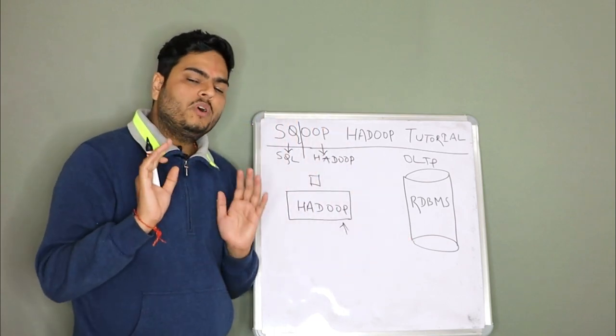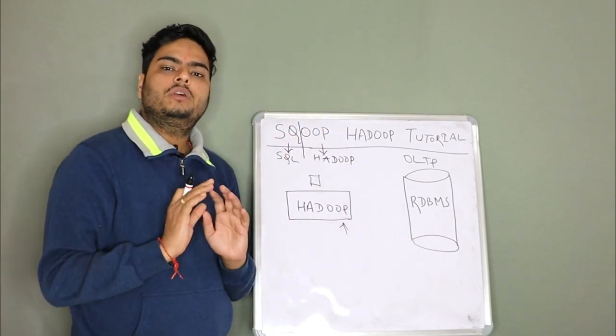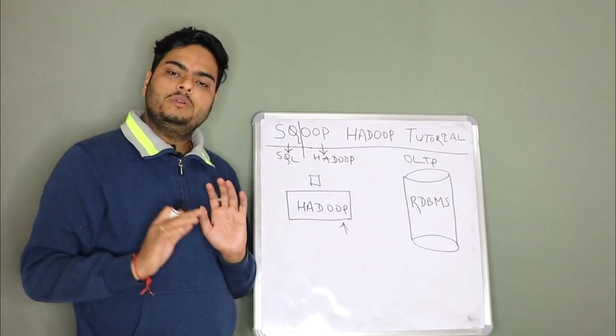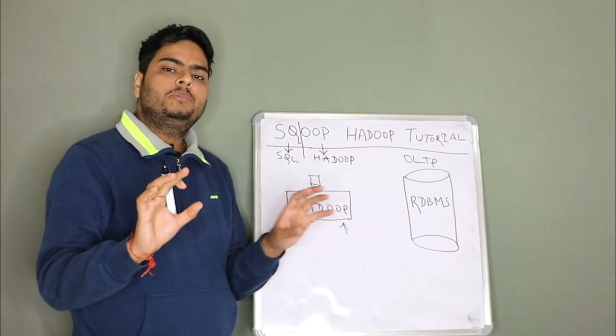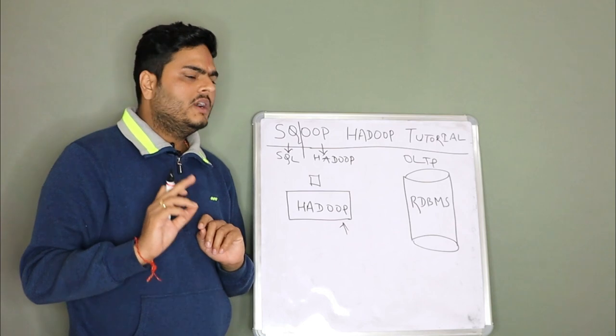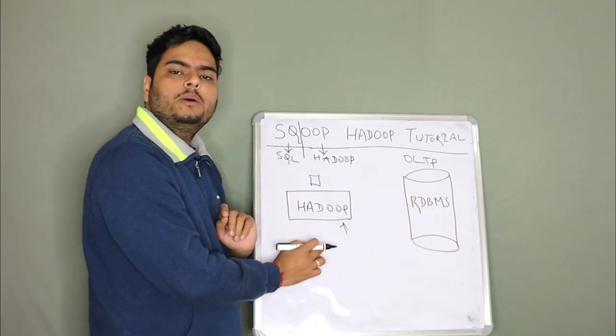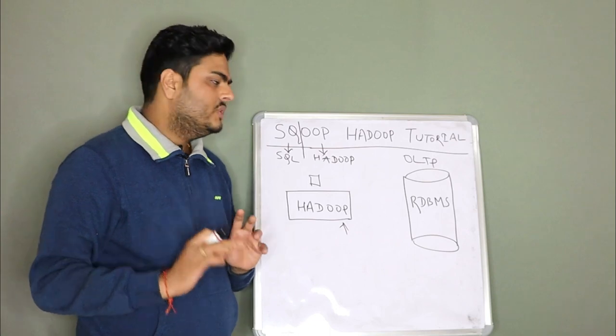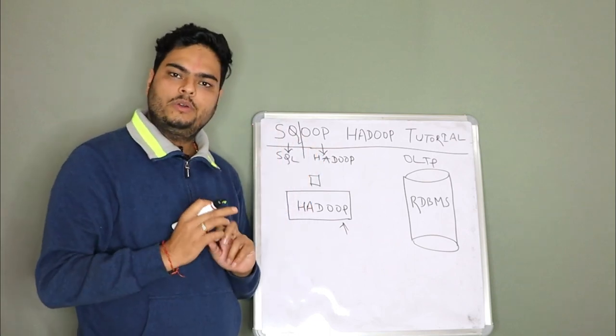Now that is the use of Hadoop and that is the use of RDBMS. Hadoop is a very fast processing engine or it will give you very fast processing power because of parallel computing. So what if I want to pull the data from here and do the computing here? That is where Sqoop comes into picture.